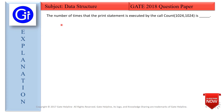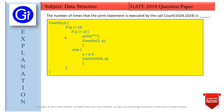We will now see the explanation to this question. We are asked to find the number of times the print statement is executed by the call count(1024, 1024). We will start with the pseudocode. We are starting with the function count(x, y), and inside this function we have an if condition. We are checking if y is not equals to 1.